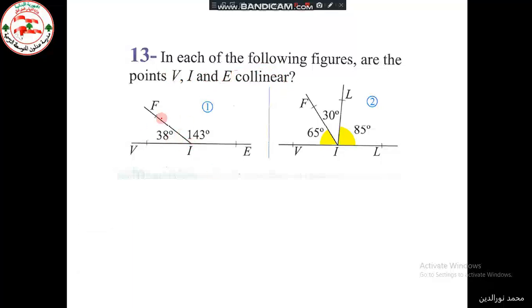Let's first look at the first figure. We have the angles VIF and FIE. This angle equals 38° and the other one is 143°. If we add them up, we get 38 + 143, which equals 181°.